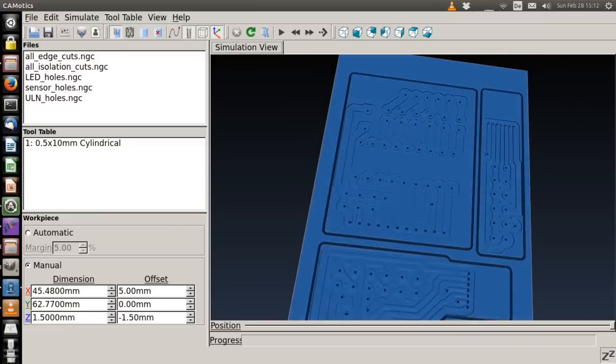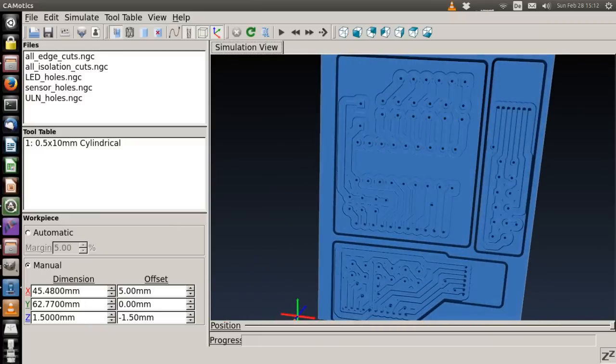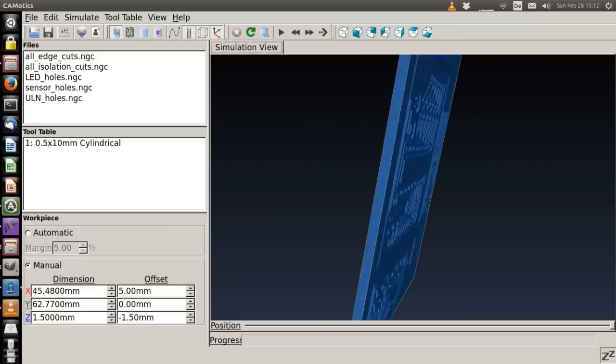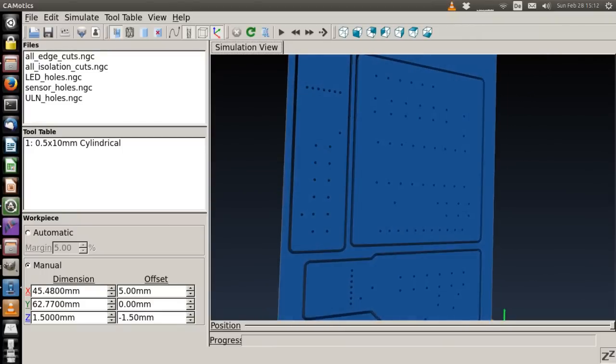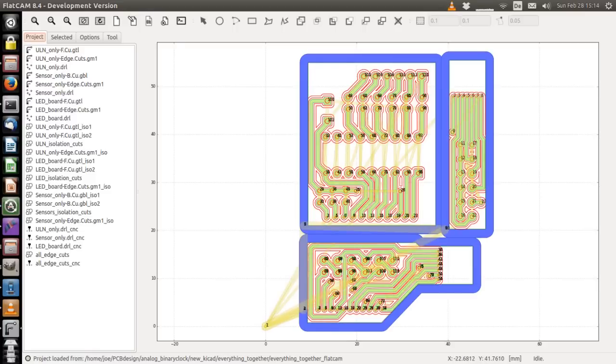I might make another video soon because I'm working on a project that could not be done without the milling machine. This possible next clip will show more about PCB milling and tell a bit about the software FlatCAM that I use now for turning PCBs into G-code. See you next time!